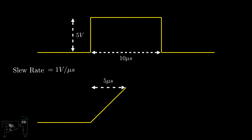After that, the output will stay constant at 5 volts until the negative edge of the input. After this, the voltage will fall at a rate of 1 volt per microsecond. Hence, it will take 5 microseconds to become 0 again.